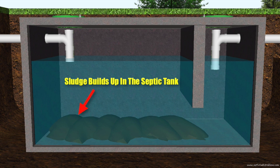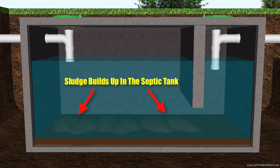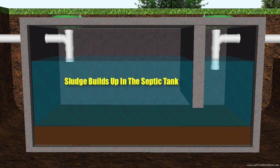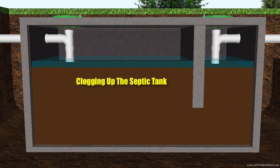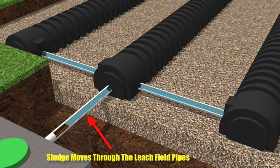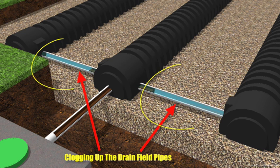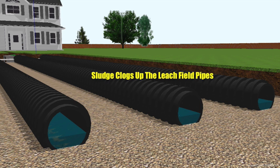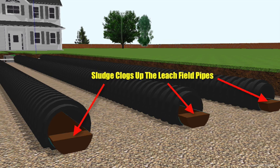The biggest problem with every septic tank is sludge. Over time, solids settle on the bottom of the septic tank. If the septic tank is not pumped out every year, this sludge builds up and eventually exits the septic tank toward the drain field pipes. The sludge makes its way through the small connecting pipes and completely clogs them up, restricting wastewater flow. When it reaches the drain field pipes, it clogs the entire system, trapping wastewater so it can no longer be discharged or treated in the gravel or soil.